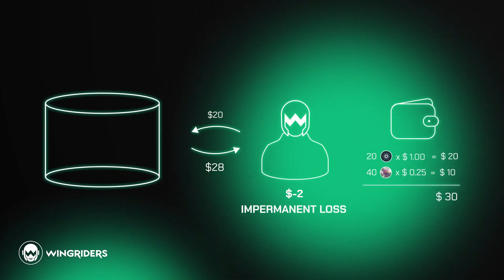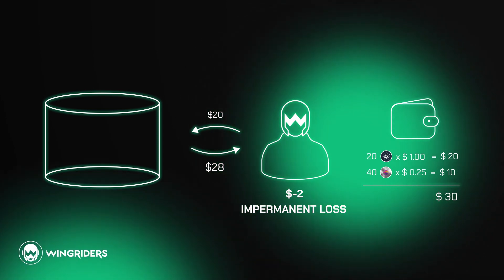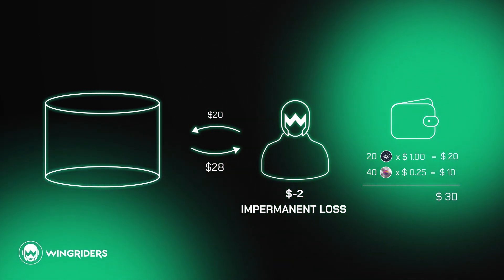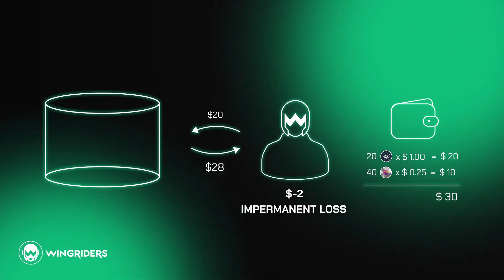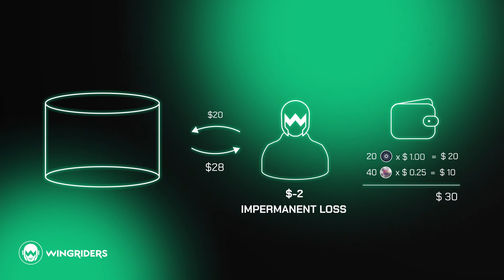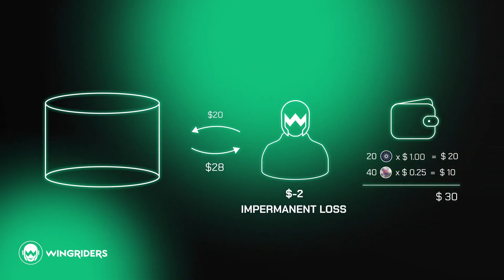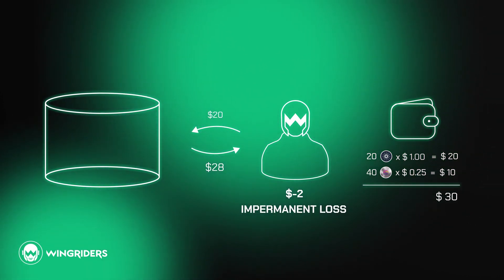It's the difference between holding assets in a liquidity pool and holding them in your wallet. It's called impermanent because it's just on paper. It's the amount you would have less if you withdrew your assets from the liquidity pool. In that case, it would become real and permanent.